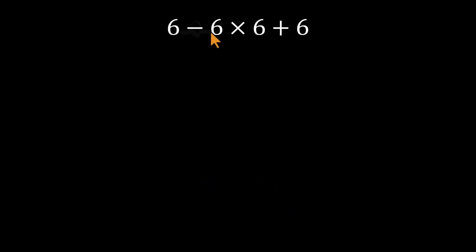Others go straight from left to right. They do 6 minus 6 equals 0. Then 0 times 6 equals 0. And finally, 0 plus 6 equals 6. It looks logical, but math doesn't really work that way.